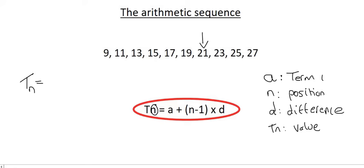So, 21 is at position number 1, 2, 3, 4, 5, 6, 7. So, we could say T7, let me write that better. T7 is equal to A. A is always the first term, so that's 9, plus N, well, that's at position 7, so we'll say 7 minus 1, times by D, which is 2. And if you had to go work that out, you would get 9 plus 12, which is 21.